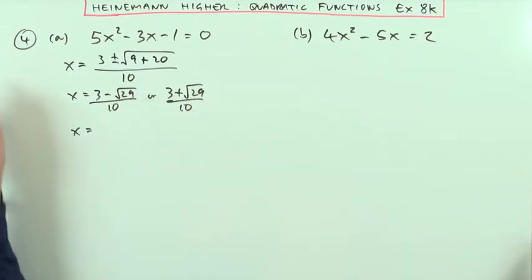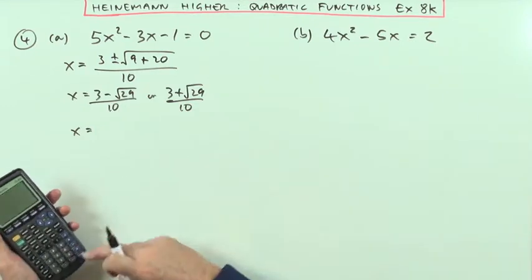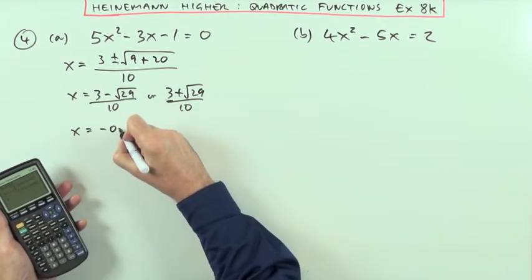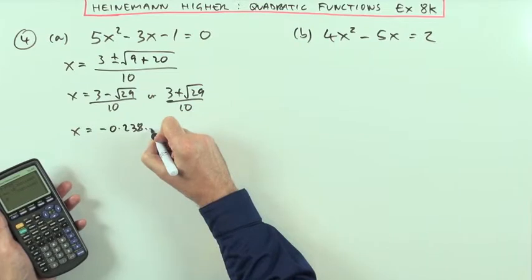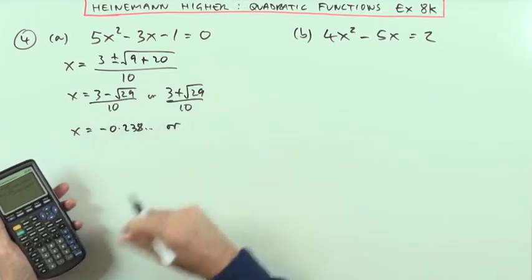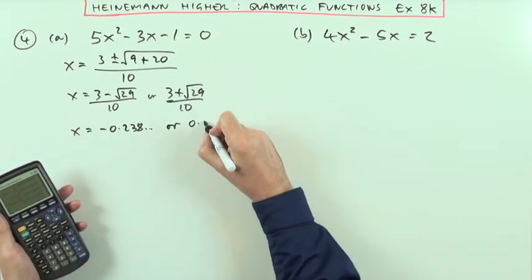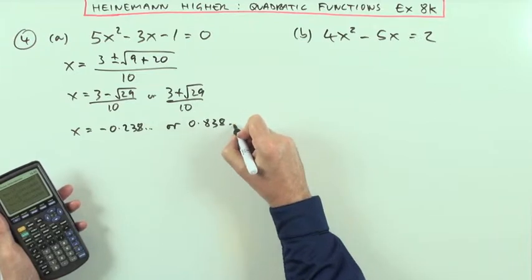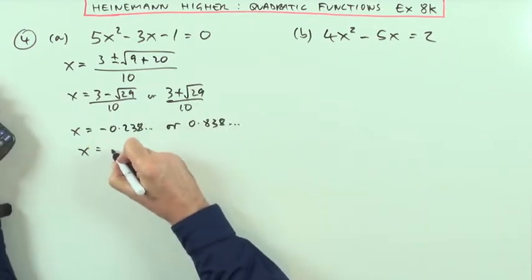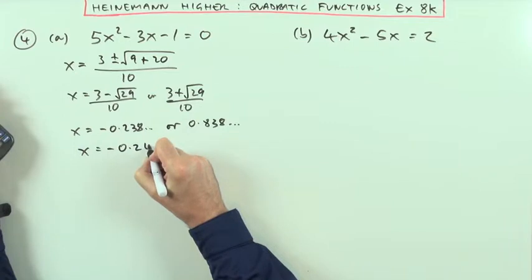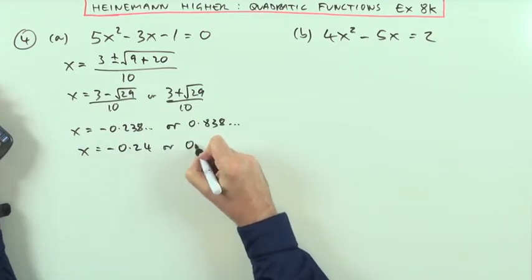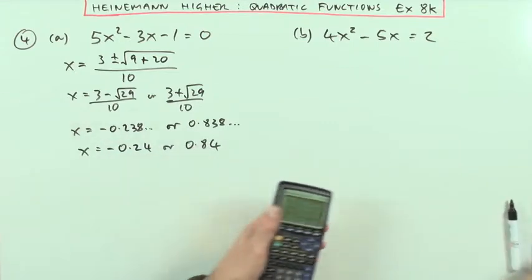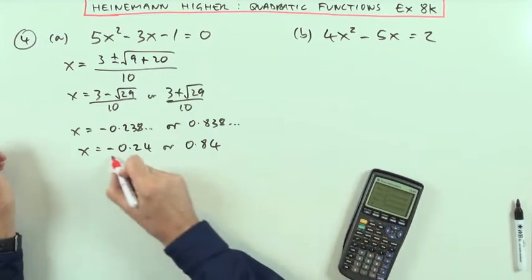So x is either equal to negative 0.238 and so on, or 0.838 and so on, so x is either equal to negative 0.24 or 0.84, just using the quadratic formula.